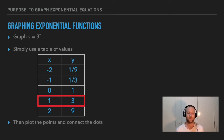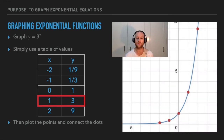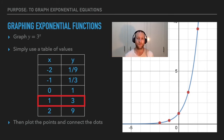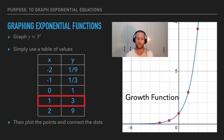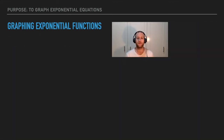Plot the points and connect them. The graph shows takeoff — a growth function — because the values are increasing from left to right, as you'd read a book.